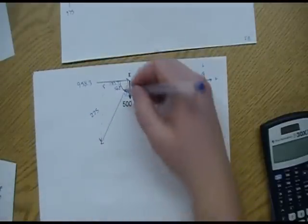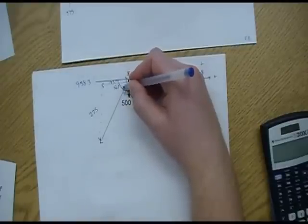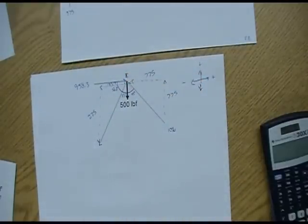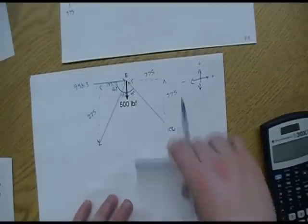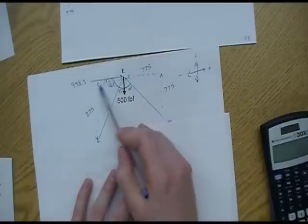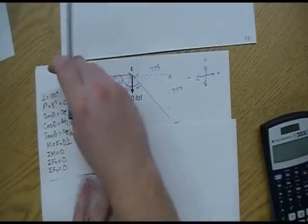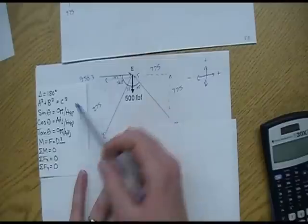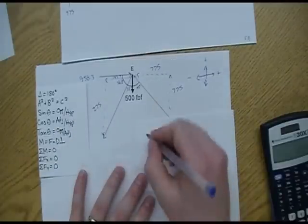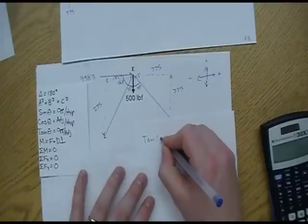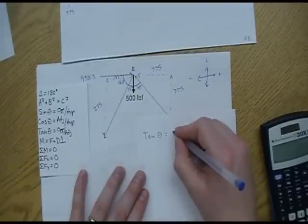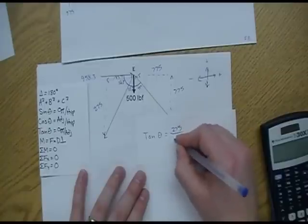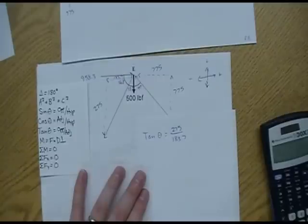Can we check this? Sure. We have this angle, 56.3, right here. And we also have the adjacent and the opposite. So I can come back here and I can actually check to make sure that these numbers all match up. So I have adjacent and opposite and this angle here. So I'm going to use tangent. So the tangent of theta equals opposite, which is 275 divided by adjacent, 183.7. Should equal the tangent of theta.